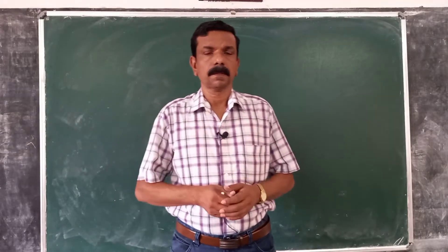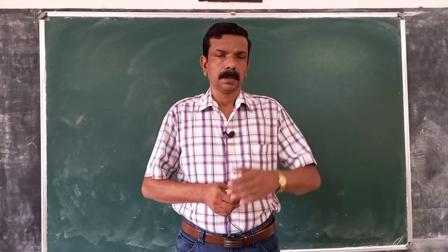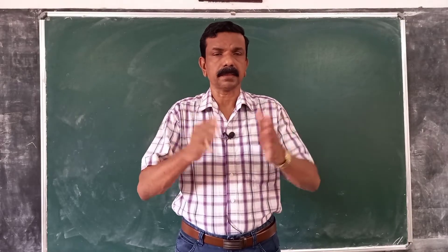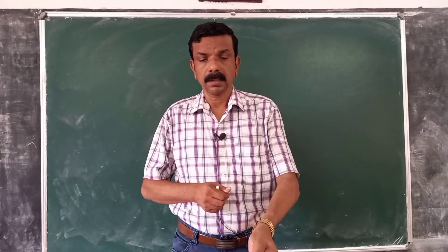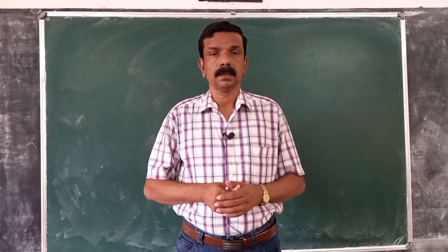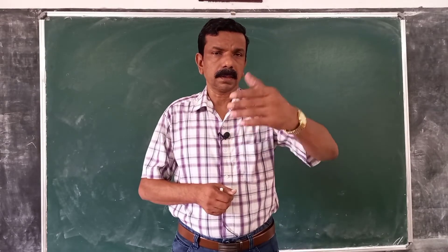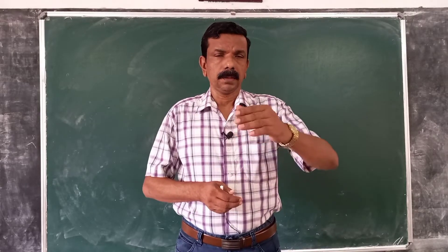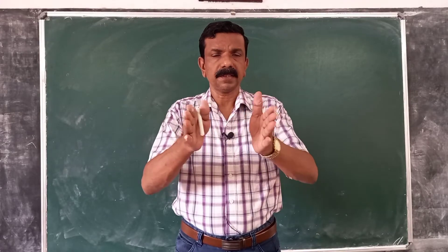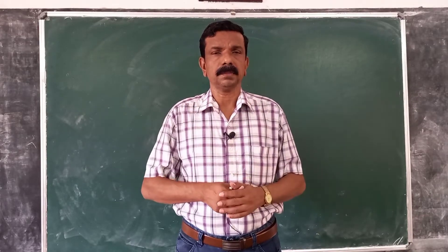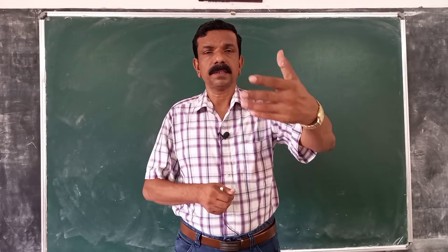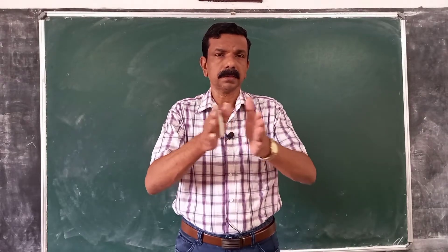Dear students, in this class we will consider some preliminary ideas about income determination in a three-sector model. In the three-sector model we introduce government. Government interferes in economic activity in two ways: one is government spending, the other one is taxation.